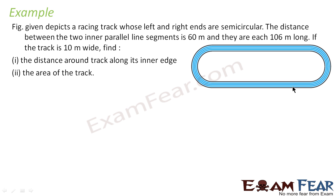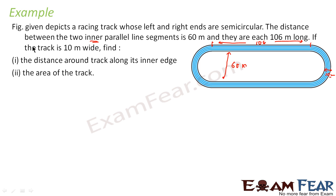The next question says there is a racing track where the left and right ends are semicircular. The distance between the two inner parallel line segments is 60 meters, and they are 106 meters long each. If the track is 10 meters wide, we have to find: first, the distance around the track along the inner edge, and second, the area of the track, which is the blue region.